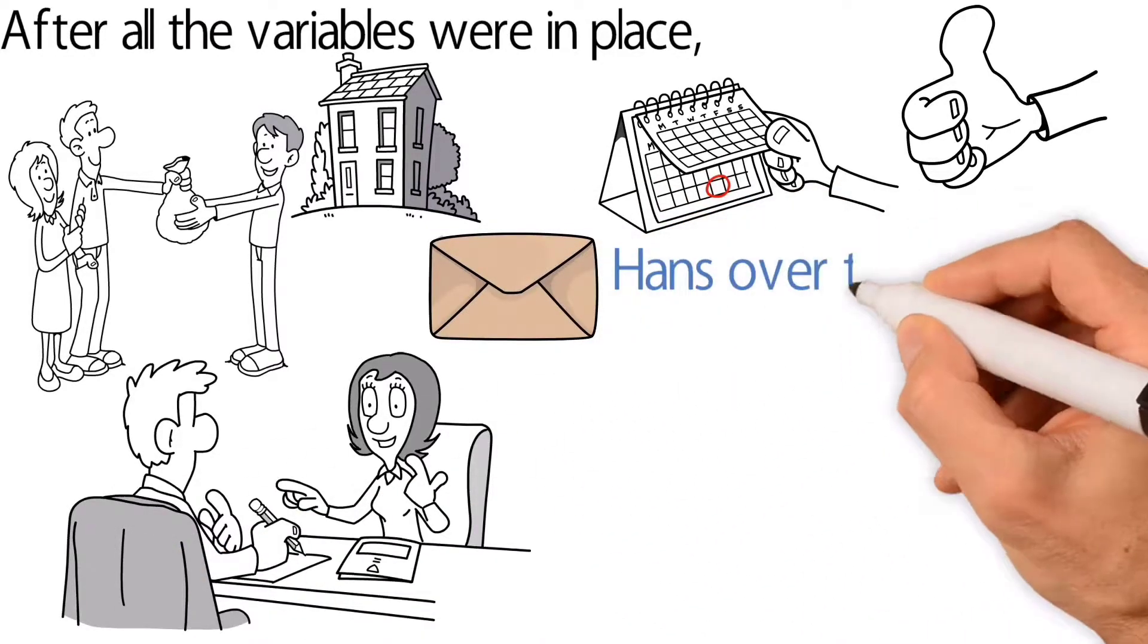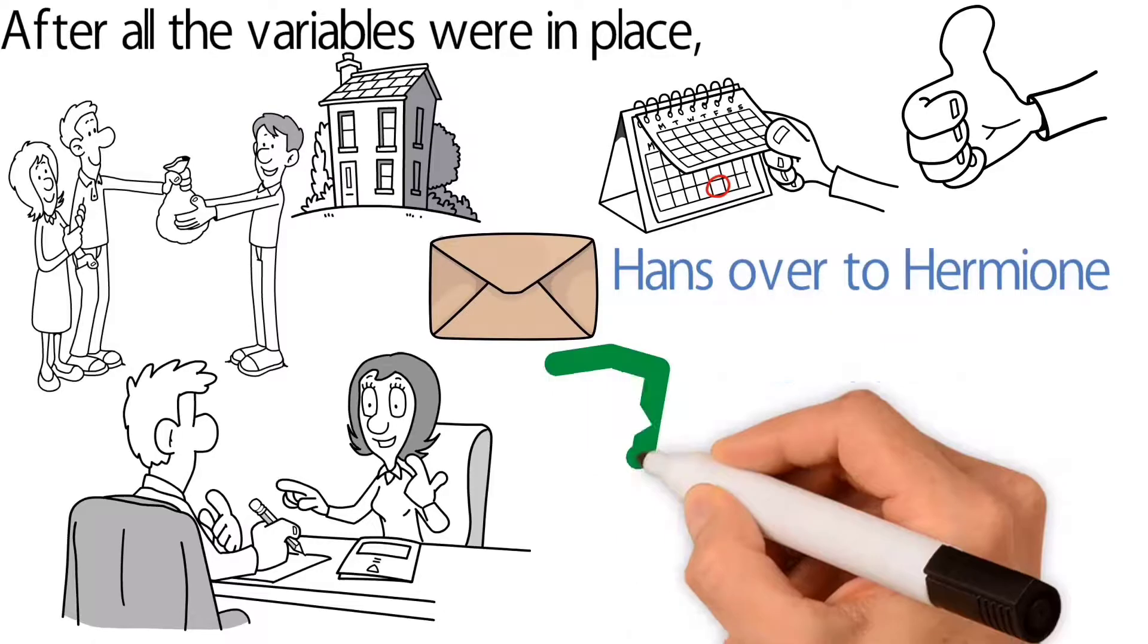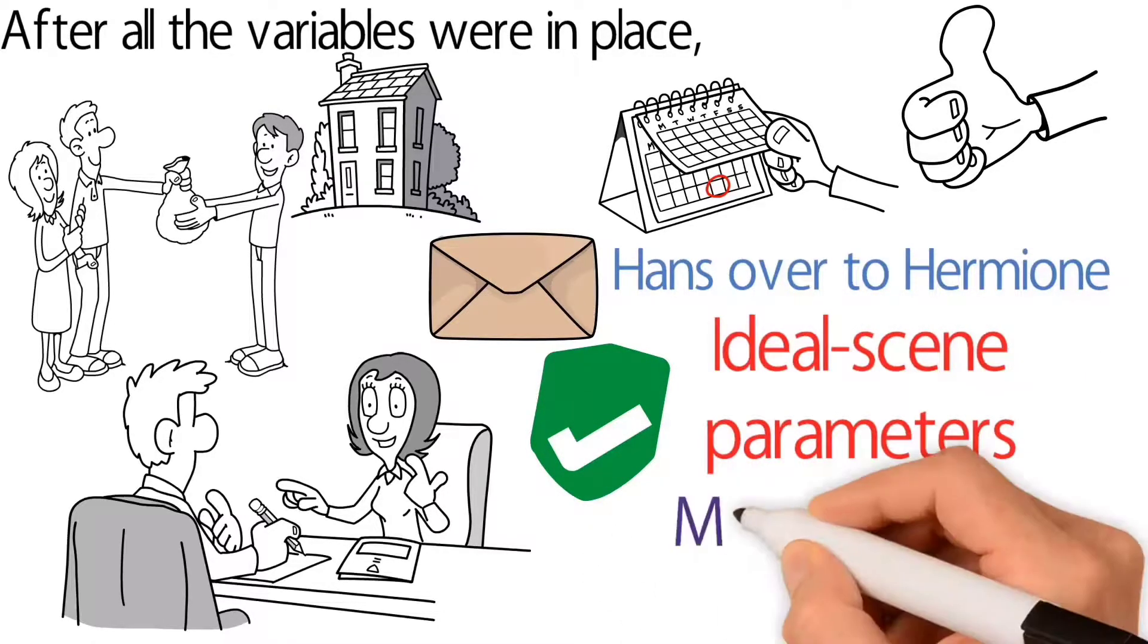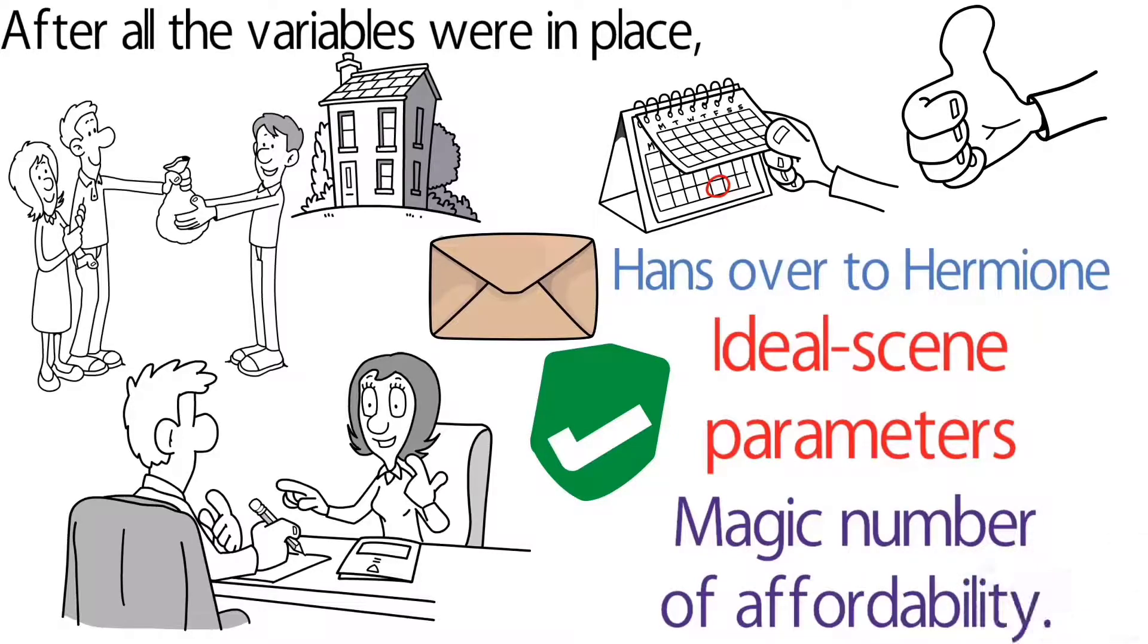He and Lisa then made sure Hermione had all their ideal scene parameters down, along with their magic number of affordability. Hermione set up a couple of different searches for Joe and Lisa.